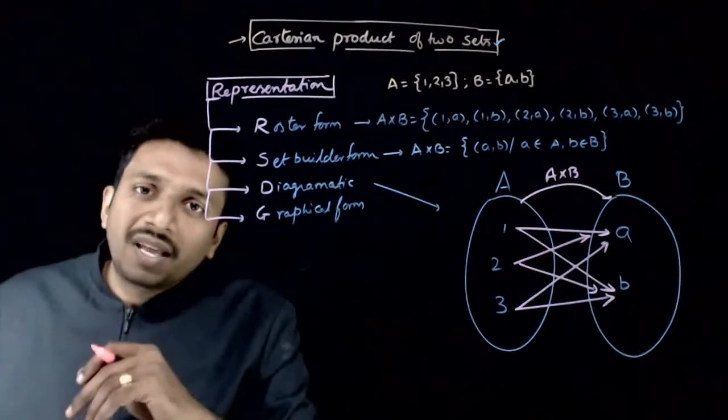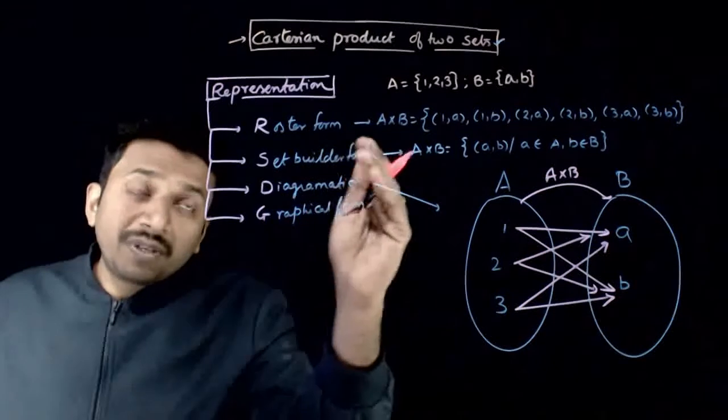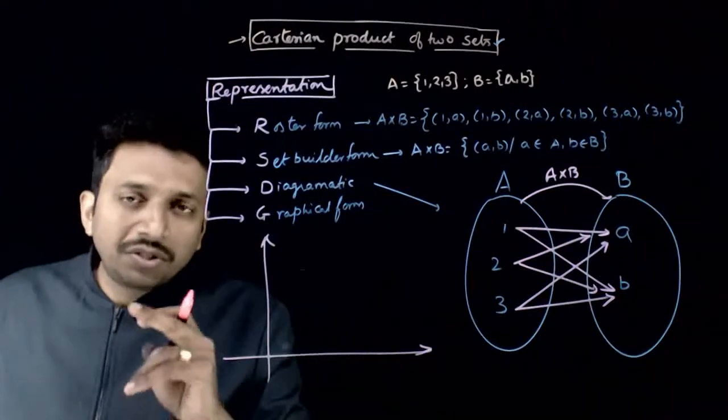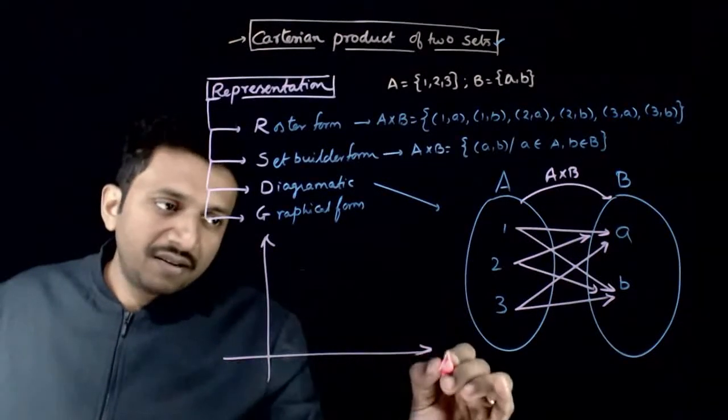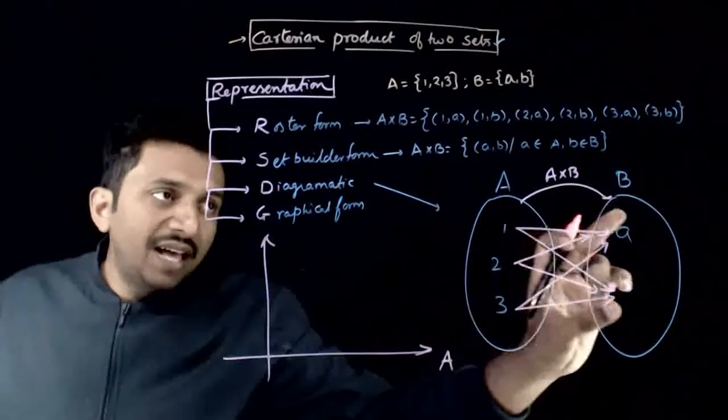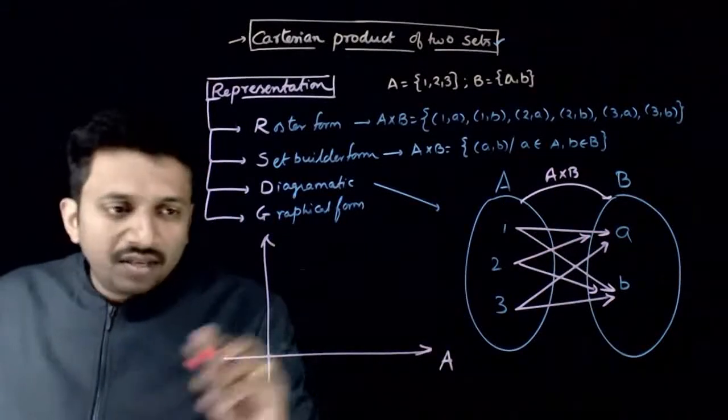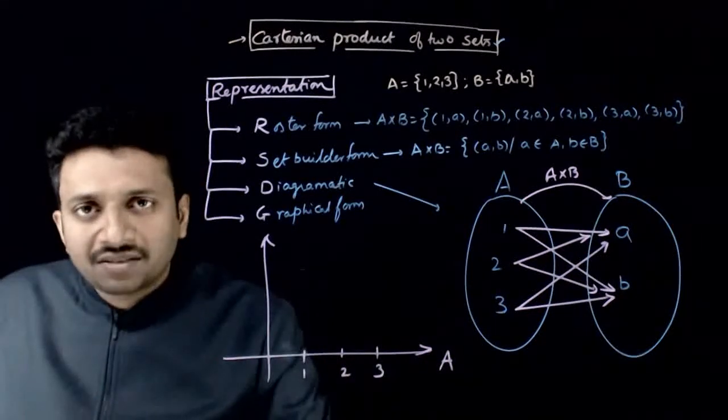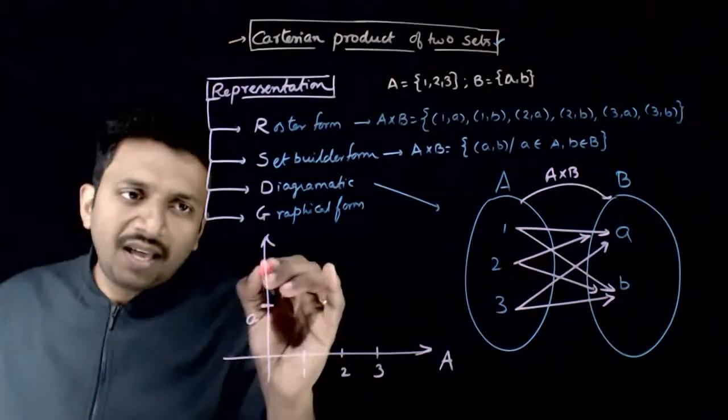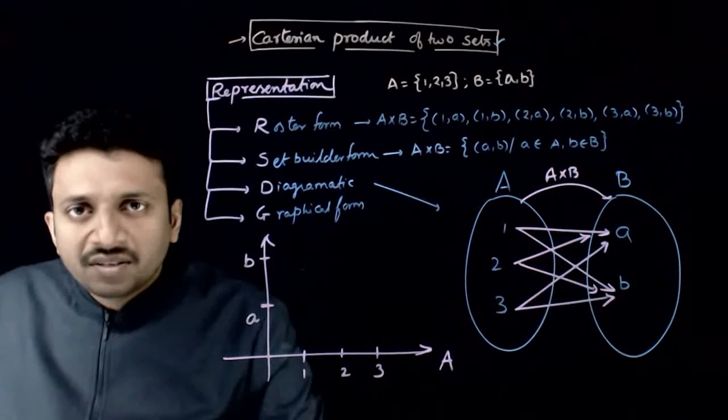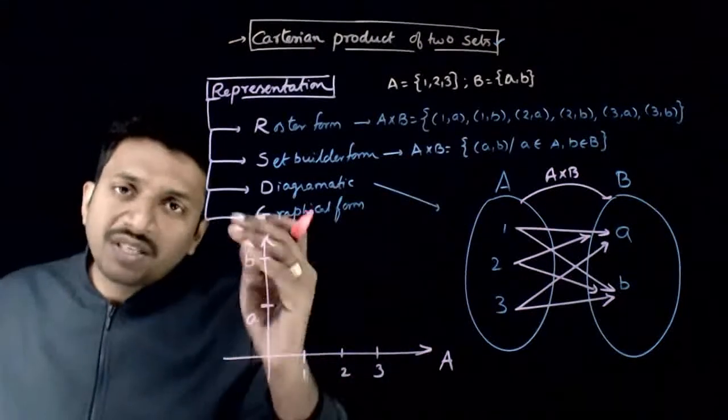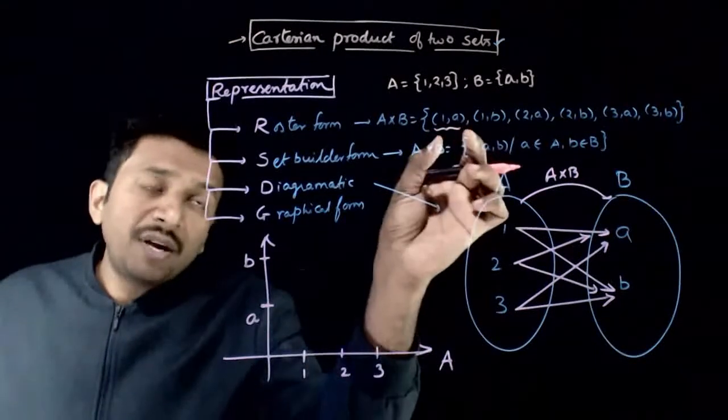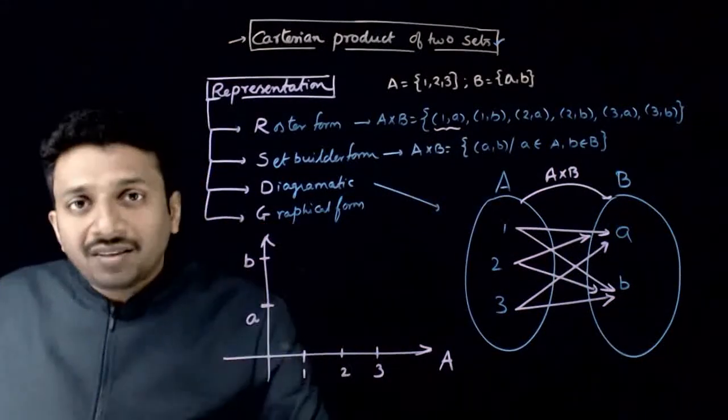And finally, you have something called graphical form. So, in graphical form, to represent A x B, we use a graph. And once you take the graph, the elements of the first set are represented on x-axis. The elements of the second set are represented on y-axis, like 1, 2, 3, these are elements on x-axis. Let us say that this is the element A, this is the element B. So, the elements of the second set are represented on y-axis. Now, each element of A x B is represented by a point in this coordinate system.